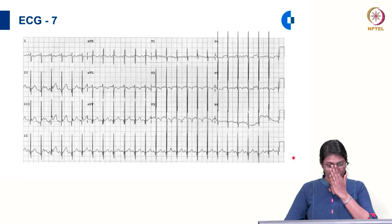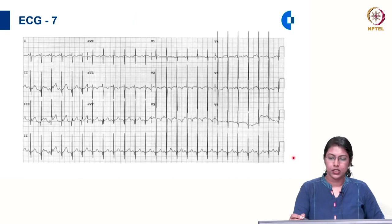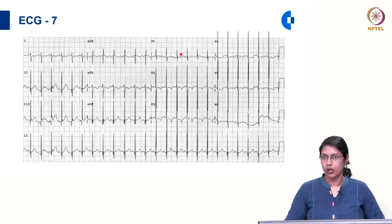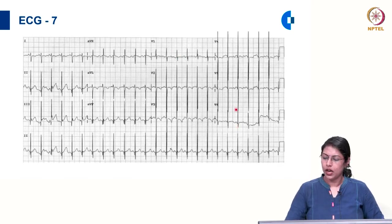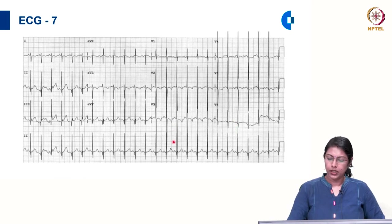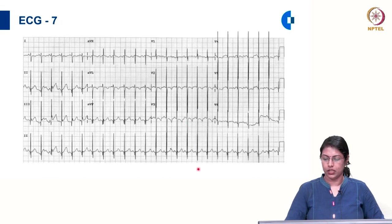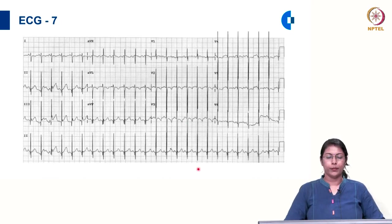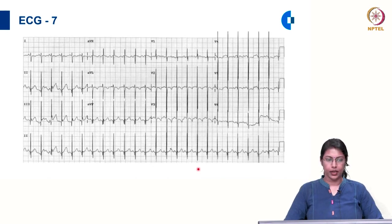If you see tall R in right precordial leads, tall R in left precordial leads, and large equiphasic QRS in the mid precordial leads, this is called the Katz-Wachtel phenomenon, which is also suggestive of combined ventricular hypertrophy.